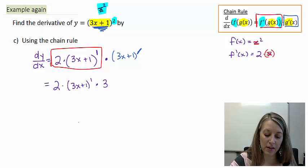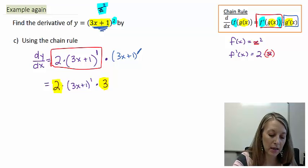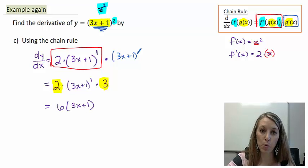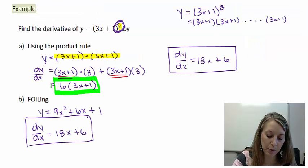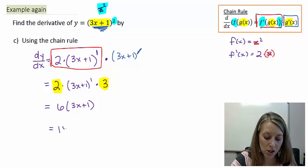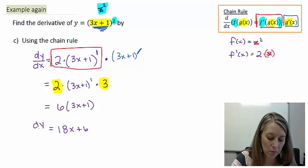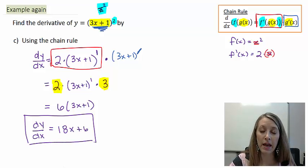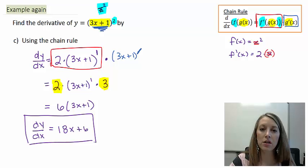Now we just simplify: we have a constant times something times another constant, so multiply the constants together — 2 times 3 gives 6 — times (3x + 1). If you remember, this is the exact same result we got from the product rule. Distributing gives us 18x + 6, the exact same answer because it's the same problem solved with a different method. I've now introduced the chain rule — if you need more examples, I encourage you to watch the next video.